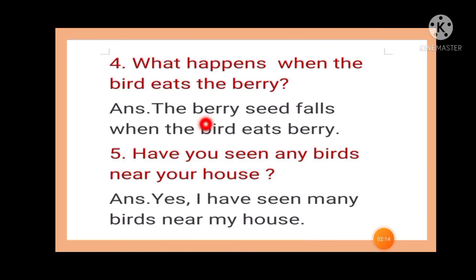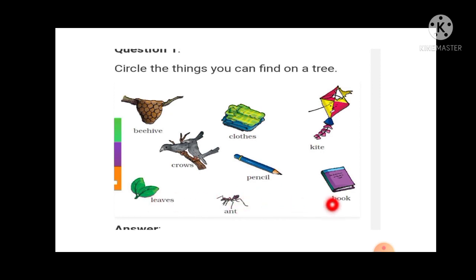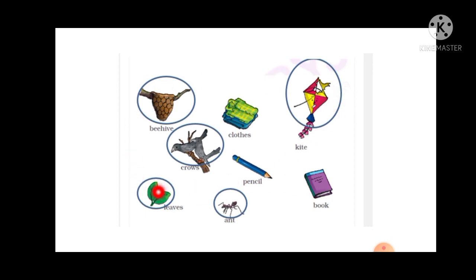Our question and answer is finished. Now see this textbook exercise: circle the things you can find on a tree. The items shown are: beehive, clothes, kites, crows, pencils, leaves, ant, and book. From these, circle the things you see on a tree. The answers are: beehive, crow, leaves, ant, and kite. Circle those in the picture.